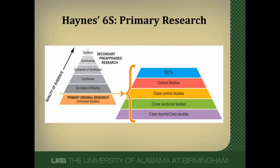As a further reminder, primary research is broken up into randomized controlled trials, the observational studies — cohort and case control studies — and a couple of other study designs we're not going to talk about. The ordering of this hierarchy is important: it goes in reverse order of bias. The risk of bias is lowest in randomized controlled trials, followed by cohort studies, followed by case control studies.